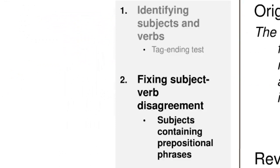There are two common situations where subject-verb disagreement appears. The first is with subjects that contain prepositional phrases. In fact, this was the situation with the example on the previous slide, where we had accurate estimates for delivery—FOR DELIVERY is a prepositional phrase.